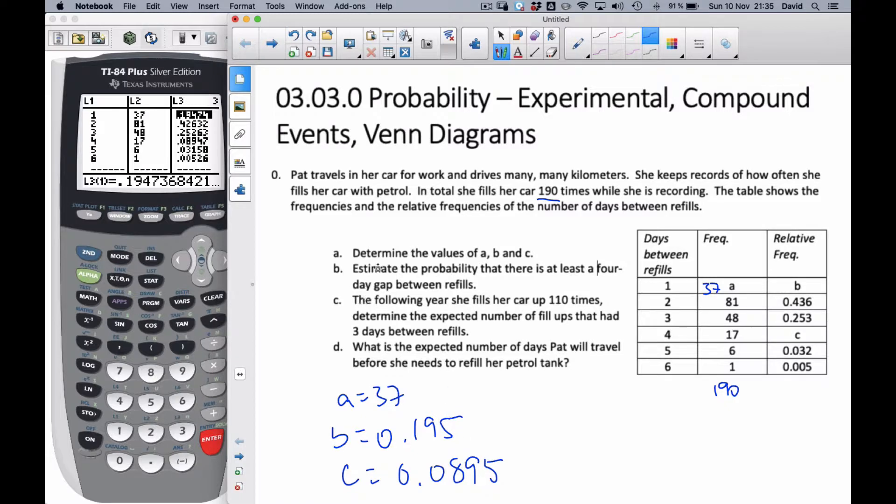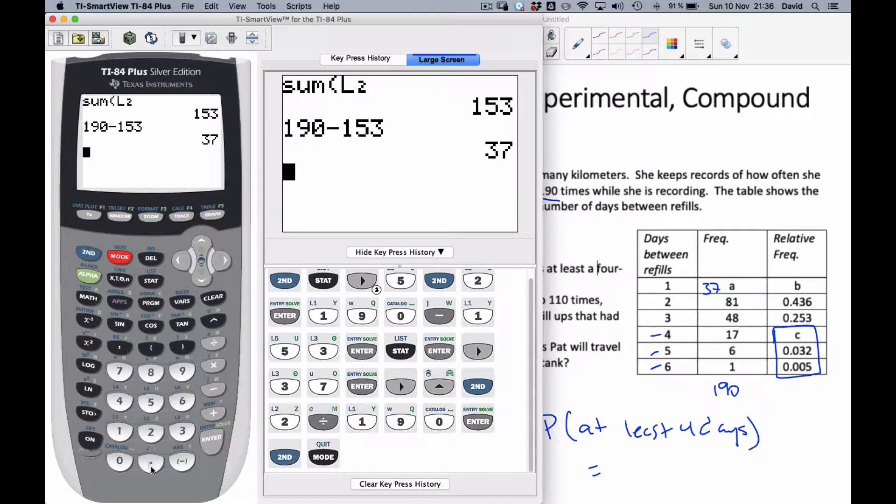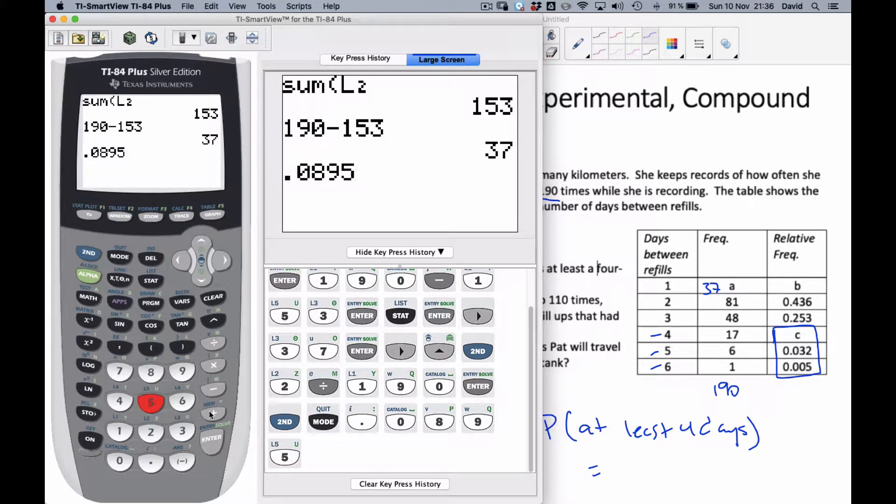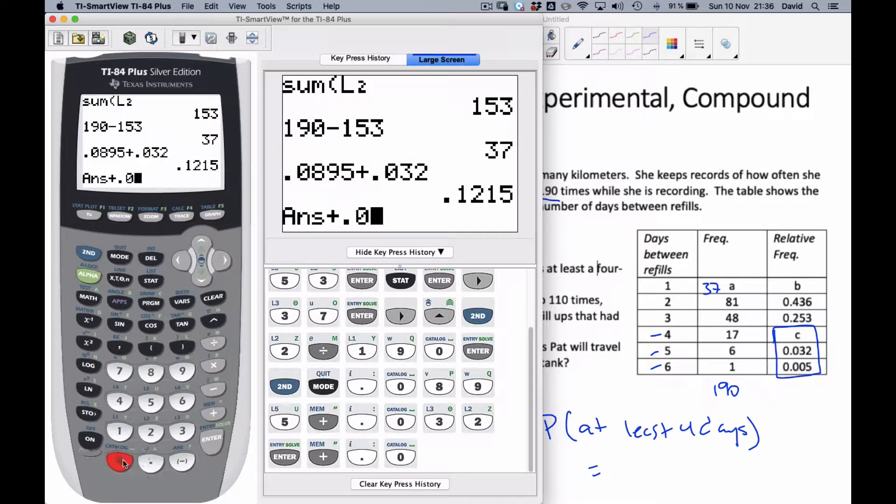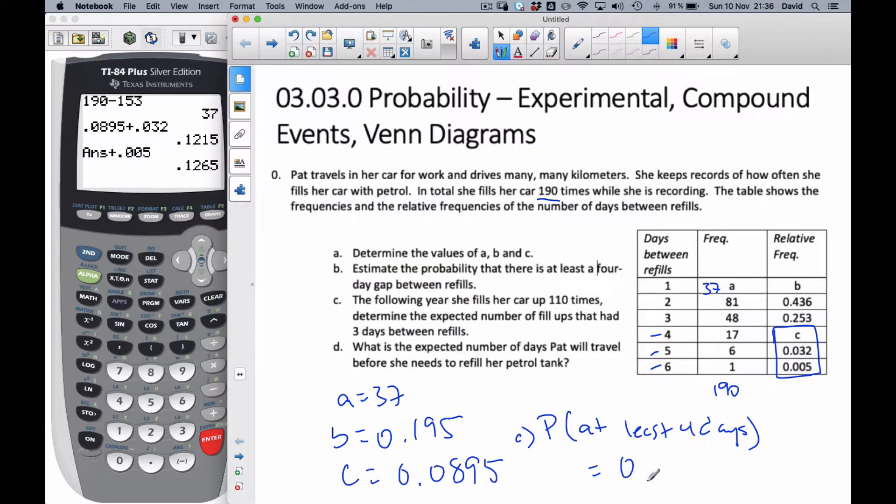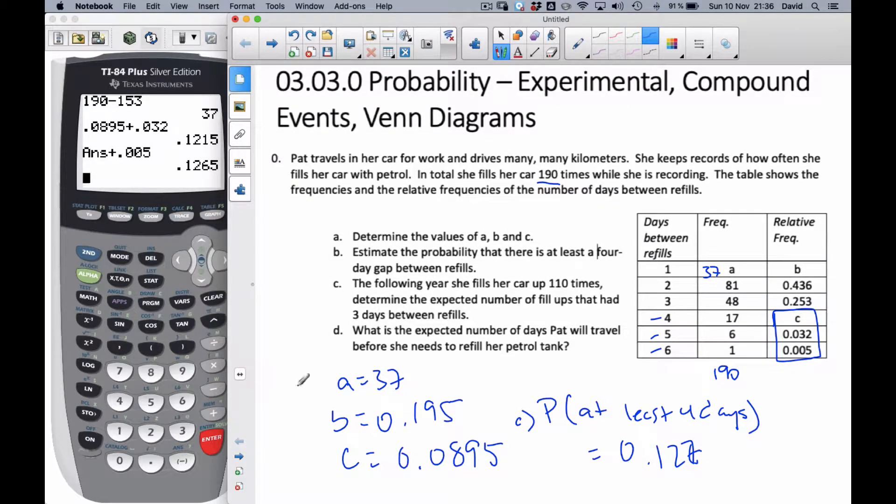So now estimate the probability that there is at least a four-day gap between refills. So this is the probability of at least four days. Well, that means I want this day, this day, and this day. And so I'm looking to add up all these probabilities here. This one I'm just going to do by hand here, 0.0895 plus 0.032 plus 0.005. And so it is going to be 0.127 is the probability of having to refill at least four days between refills.